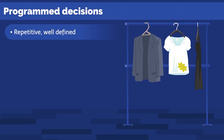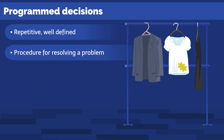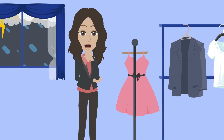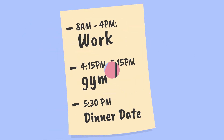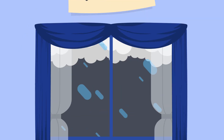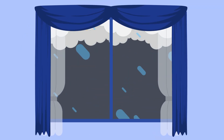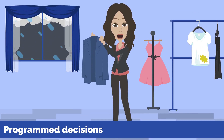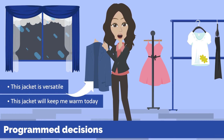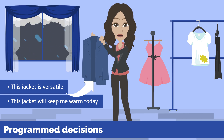Programmed decisions are repetitive and well-defined. There are procedures that exist for resolving the problem. For example, the decision of what to wear in the morning — it's a problem that's clear in scope and clear in parameters. I have to consider what I'm going to be doing that day, what the weather's like, what clothes are clean in my closet. I face the same problem day in and day out. These programmed decisions have a reliable set of outcomes and don't require any deep decision-making skills.